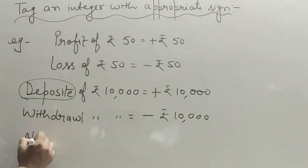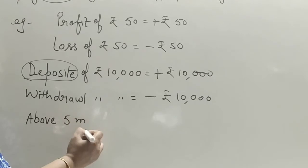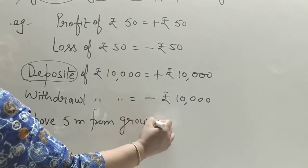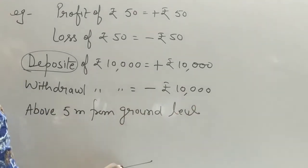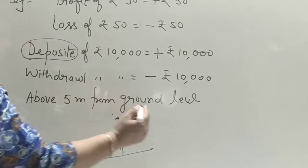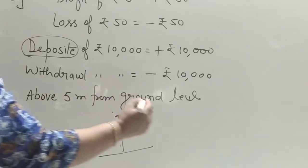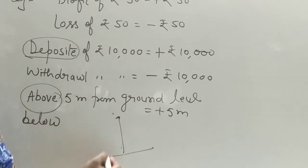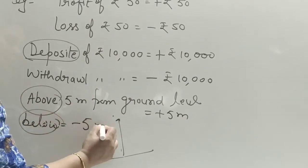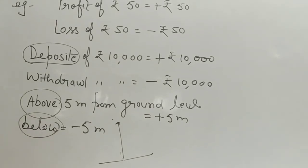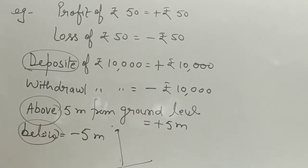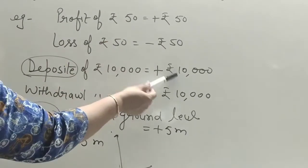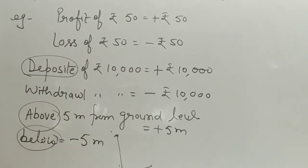If the statement is 'above five meters from ground level,' ground level is the reference, and above means plus, so it is plus five meters. We represent 'below ground level' as minus five meters. These are some words in this chapter where we have to convert a statement into a number with the appropriate sign.